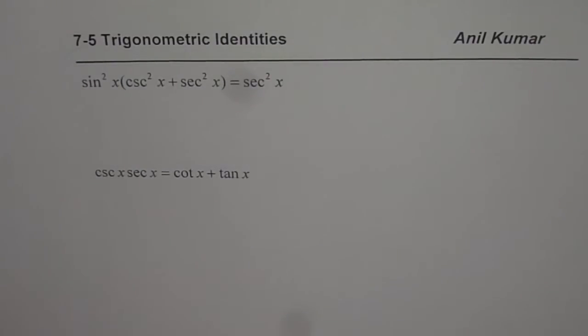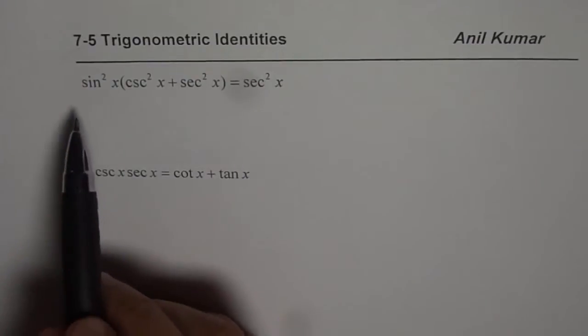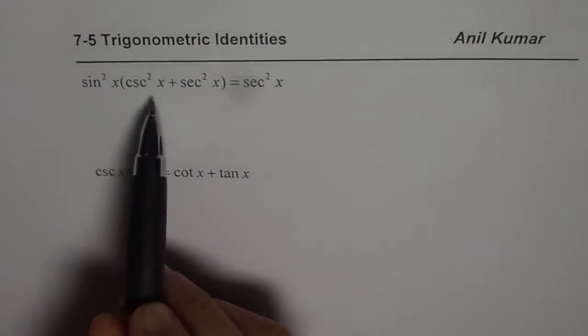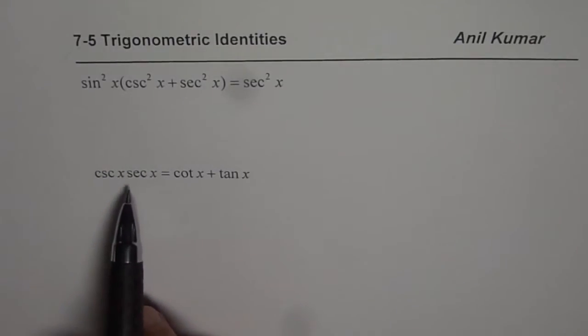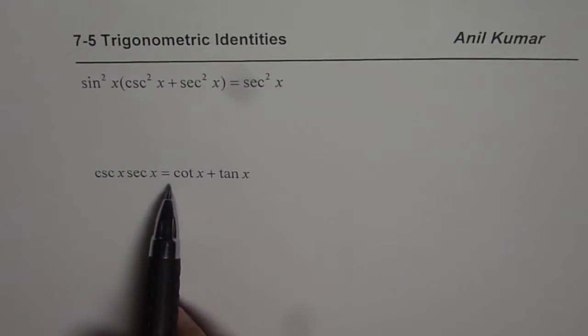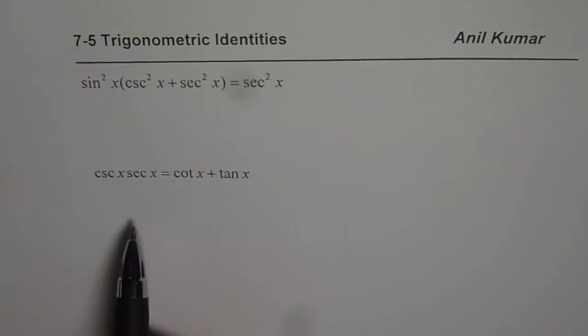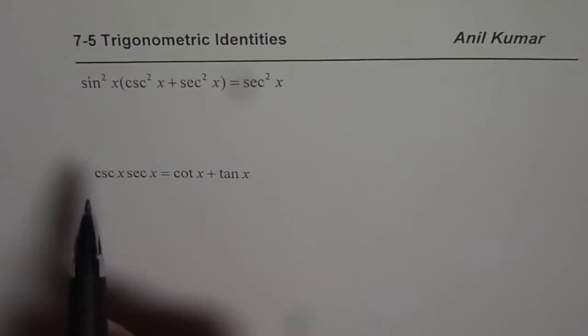We have two identities on this page. The first one is sin²x(csc²x + sec²x) = sec²x. The second one is csc x sec x = cot x + tan x. So let's begin from the very first one.